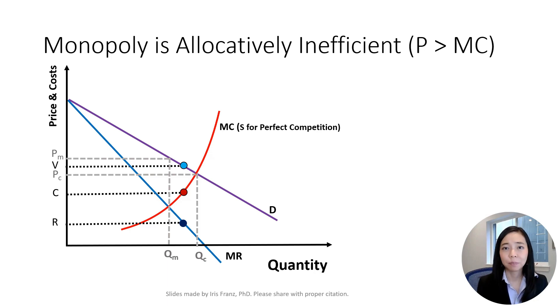Not only this unit, but all units between QM and QC will not be produced under monopoly. Because between QM and QC, the benefit, the blue dashed line, outweighs the cost, the red dashed line. We have this red area that is the deadweight loss.